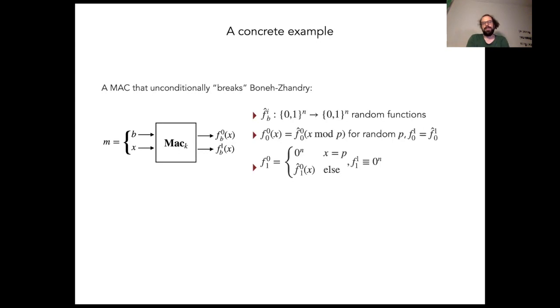For B equals zero, the first part is a random periodic function with period P, and the second part is a uniformly random function. But if B equals one, then the first part is a uniformly random function, except if the input is P, then we set it to the all zero string. And the second part is just identically zero.